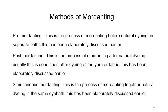Methods of mordanting: there are three types of mordanting methods. Pre-mordanting is the process of mordanting before natural dyeing the fabric in a separate bath. Post-mordanting is the process of mordanting after natural dyeing, usually done soon after dyeing of the yarn or fabric. Simultaneous mordanting is the process of mordanting and natural dyeing together in the same bath — along with the natural dye, the mordant is added, creating a combined mordant and dye bath.